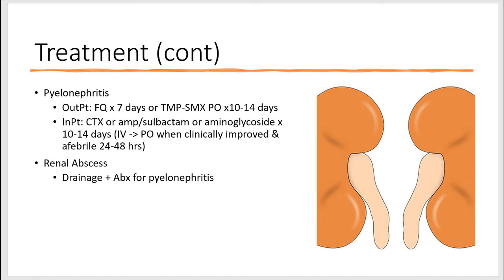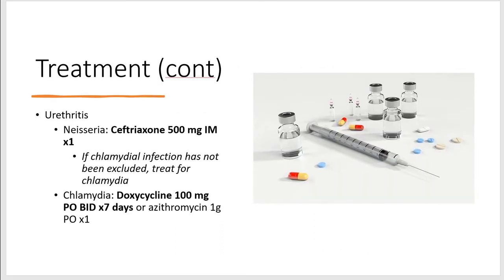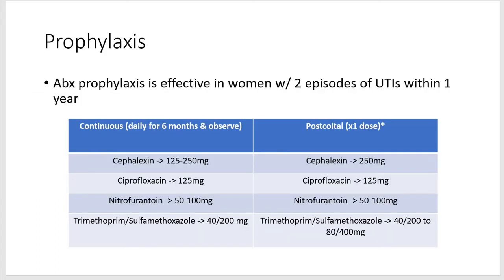If you're concerned for renal abscess, these patients will need to be drained, and the antibiotic regimen is the same as for pyelonephritis. Treatment for urethritis depends on if it's gonorrhea or chlamydia. For Neisseria gonorrhea, we treat with ceftriaxone 500mg IM times one dose. If chlamydia infection has not been ruled out, we also treat chlamydia with doxycycline 100mg twice a day. In women with more than two episodes of UTIs within one year, we can treat prophylactically — either a continuous daily regimen for six months, or a one-time dose two hours before intercourse. The different types of treatment are noted in the table.